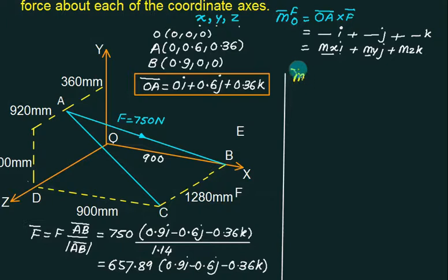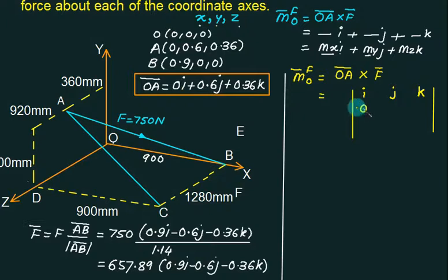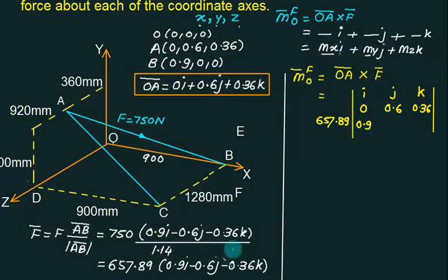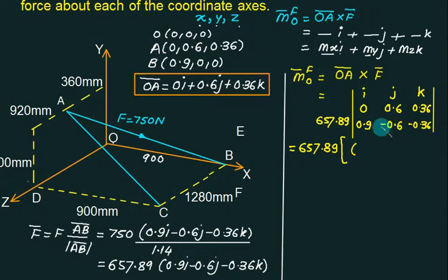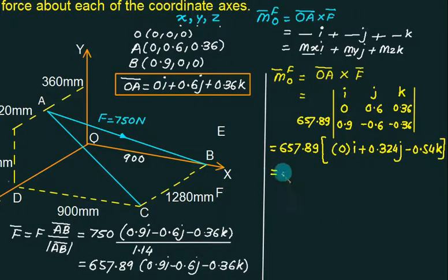The moment of force about point O is OA cross F̄. We write OA = (0, 0.6, 0.36). The force components (with 657.89 taken as constant outside the determinant) are (0.9, −0.6, −0.36). We compute the cross product: 0.6 × (−0.36) minus terms, giving a coefficient of 0.324, and then multiply by 657.